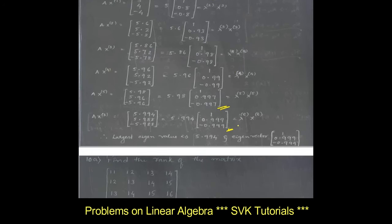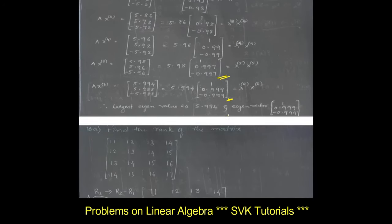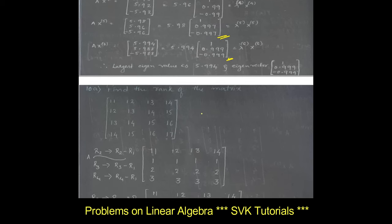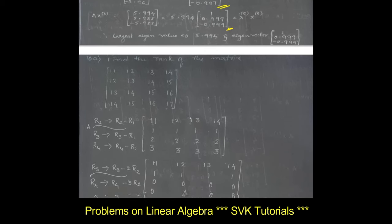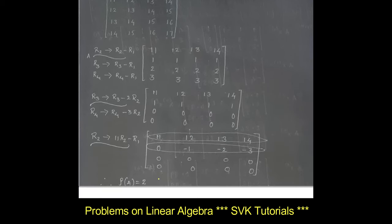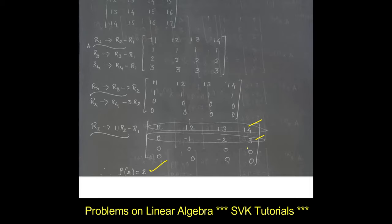Moving on to question 10a: find the rank of the matrix. As I explained earlier for solving rank, for this problem we are going to get the rank as 2, since we have 2 non-zero rows.